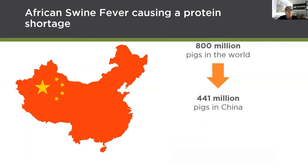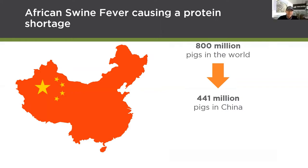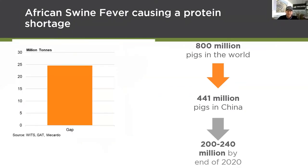African swine fever doesn't just impact China — it's been in Northern Europe for some time, it's now in other Asian countries, and it's as close as Timor. The big problem is in China because more than half the world's pigs were there to feed them. By the end of this year, that number in China will halve — meaning there's a deficit of roughly 25 million tons of protein.